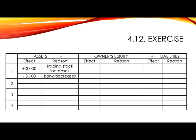Let's look at the first part for cash sales. You will increase your bank account and your equity as sales is an income. So in assets, you show plus R15,000 as bank increases, and in equity, plus R15,000 for sales income.